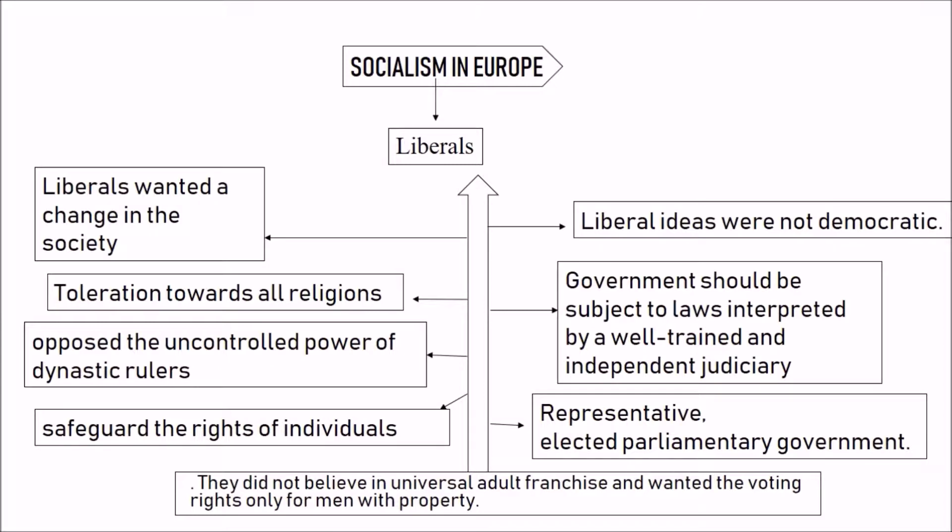Socialism in Europe — let us first try to understand the views of the Liberals. Liberals wanted a change in society but were not democratic. They had toleration towards all religions and wanted governments to be subjected to laws interpreted by a well-trained, independent judiciary. They wanted a representative elected parliamentary government and opposed the uncontrolled authority of dynastic powers. They wanted voting rights only for men who had property.